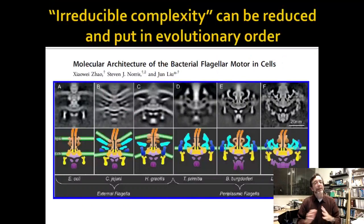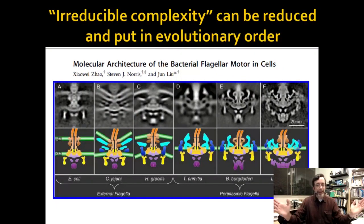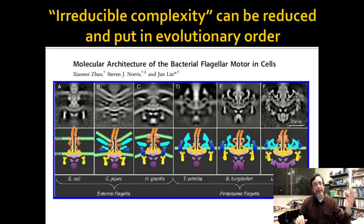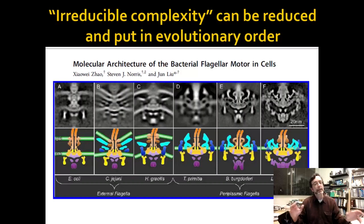What's really interesting is all flagella sort of look like this, and they have variation within them where they look like different versions of FO. Here we have E. coli, C. jejuni, T. primitia — six different flagella — and you can see that they all are slight variations on each other.